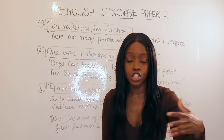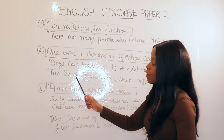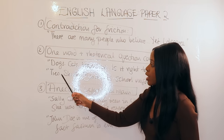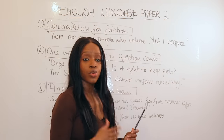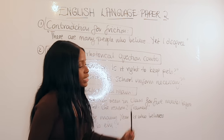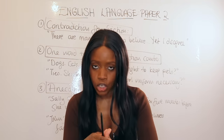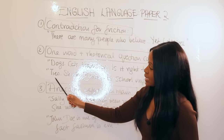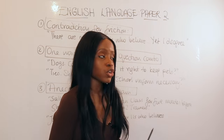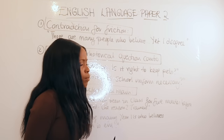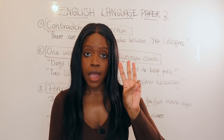For example, with pet ownership, you can start by saying 'Dogs. Cats. Hamsters.' — three single words — then add the rhetorical question: 'Is it right to keep pets?' You're starting off in a really engaging way. For the school uniform example: 'Ties. Shirts. Blazers.' then your rhetorical question: 'Is school uniform necessary?' Once more, you're starting off in a really engaging way.